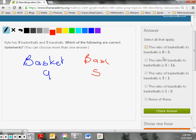Let's take a look. The ratio of basketballs to baseballs is 9 to 5. Absolutely. The ratio of baseballs to basketballs is 5 to 14. I disagree with that. When I have 5 baseballs, I have 9 basketballs, not 5 to 14. The ratio of basketballs to baseballs is 2 to 1. That means for every 2 basketballs I have, I have 1 baseball. Well, that means if I had 10 basketballs, I'd have 5 baseballs, which is not the truth. When I have 9 basketballs, I have 5 baseballs.